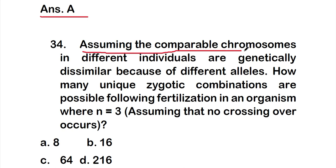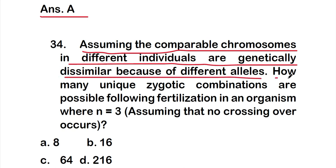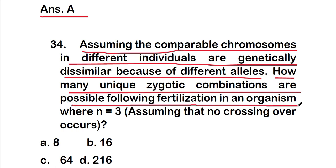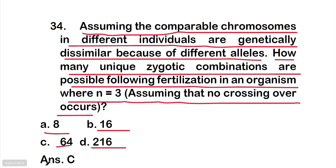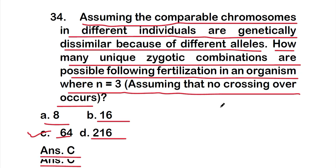Question 34: Assuming comparable chromosomes in different individuals are genetically dissimilar due to different alleles, how many unique zygotic combinations are possible following fertilization in an organism where n = 3, assuming no crossing over? Options are 8, 16, 64, or 216. The right answer is option C — 64.